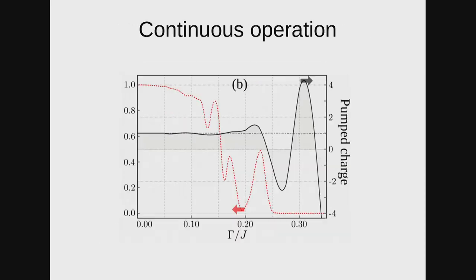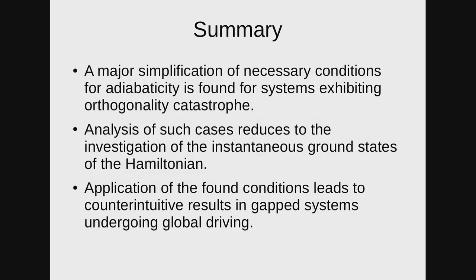This is the fidelity per cycle. The fidelity per cycle is good here, and the pumped charge is 1. Now, when the fidelity drops, the pumped charge goes berserk — the quantization is completely lost — in complete agreement with our criterion. So these are the conclusions of my talk. Thank you for listening.